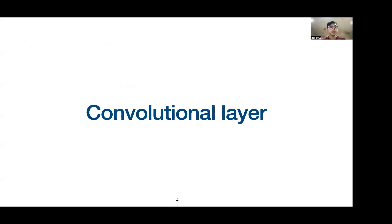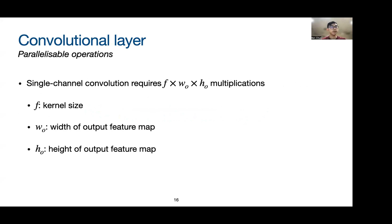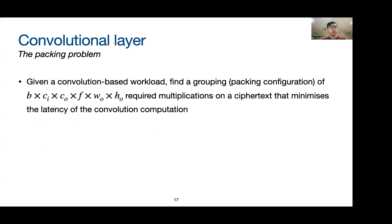For the convolutional layer, a batched convolutional layer can be decomposed into multiple single-channel convolutions. The number of single-channel convolutions is the batch size times the number of input channels times the number of output channels. For each single-channel convolution, the number of multiplications required is the kernel size times the width of the output feature map times the height of the output feature map. This gives rise to our packing problem: given a convolution-based workload, find a grouping of the required multiplications on a ciphertext that minimizes the latency of the convolution computation. We call this grouping a packing configuration.